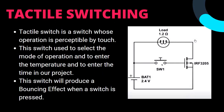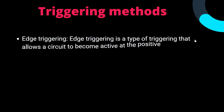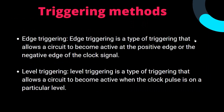The tactile switch is a switch whose operation is perceptible by touch. This switch is used to select the mode of operation and to enter the temperature and time in our project. When pressed, the switch produces a bouncing effect. There are two types of triggering: edge triggering, which allows the circuit to become active at the positive or negative edge of the clock cycle, and level triggering, which allows the circuit to become active when the clock pulse is at a particular level.